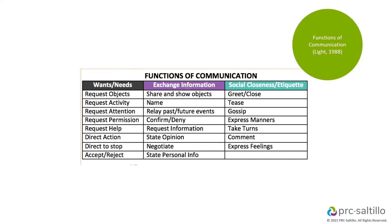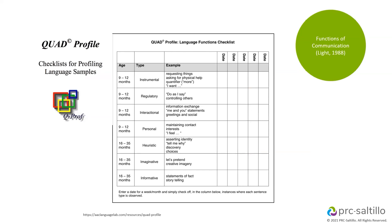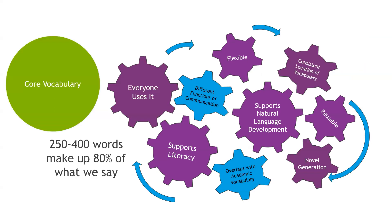Looking at communicating wants and needs: requesting foods, drinks, toys, attention, and activities. Exchanging information includes asking questions, sharing and showing objects, labeling, and sharing personal information. Social closeness and etiquette covers developing and maintaining relationships. The QUAD Profile also includes a checklist focused on language functions, divided into seven basic types of communication, so you can use that as well to think about the functions you want to target.